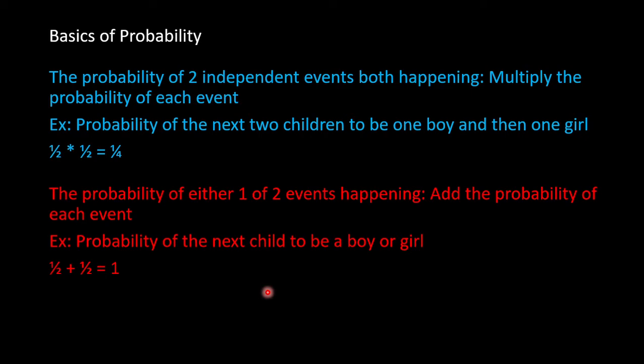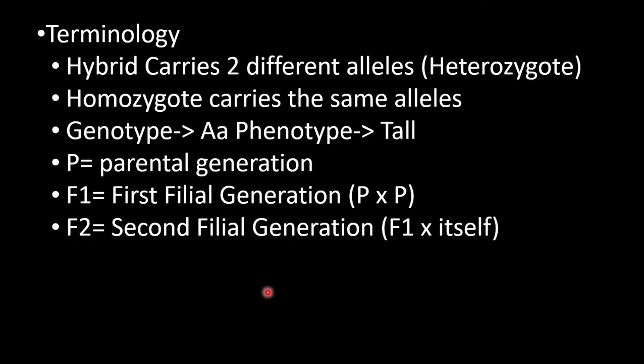When finding the probability of either one of two events happening, add the probability of each event. For example, the probability of the next child being a boy or girl is one half plus one half, which would be one. There would be a 100% chance. 'Or' is the keyword signifying addition.